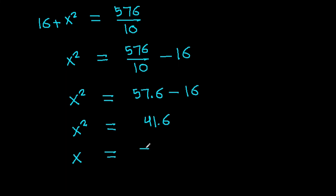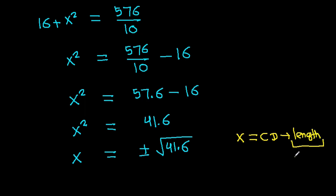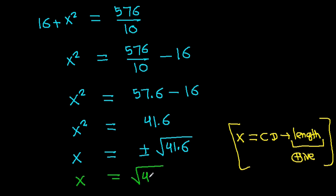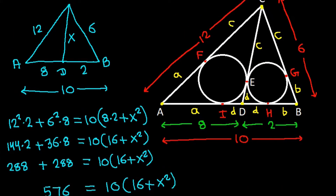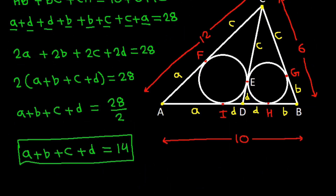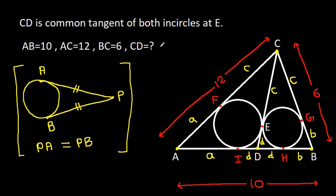So X equals plus or minus the square root of 41.6. Since X is CD, which is a length, it must be positive. Therefore CD equals the square root of 41.6.